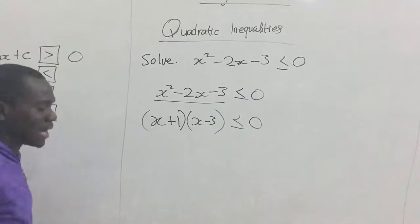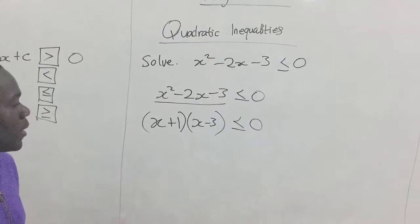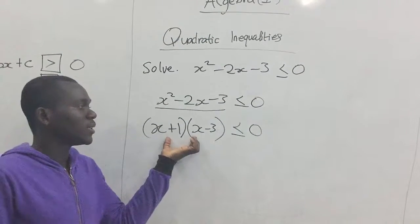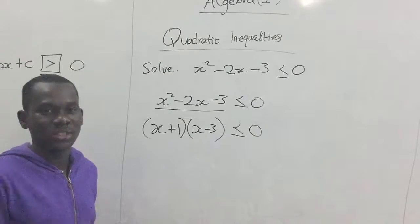Factorizing this gives us x plus 1, and also you have x minus 3, less than or equal to zero. So, after factorizing, our next step is to find the graph of these factors when we equate them to zero.